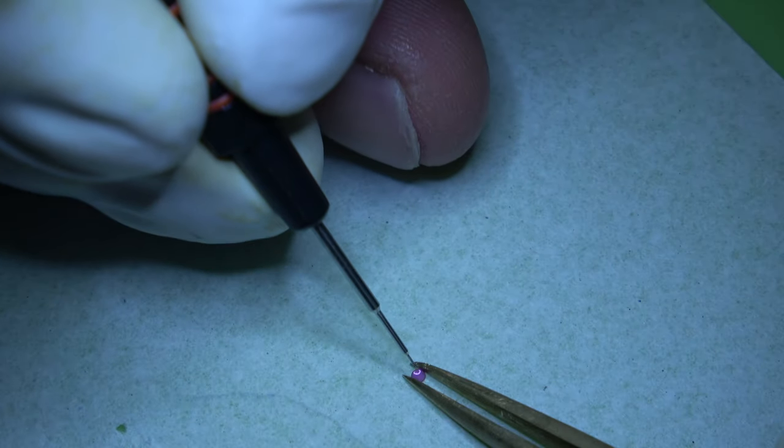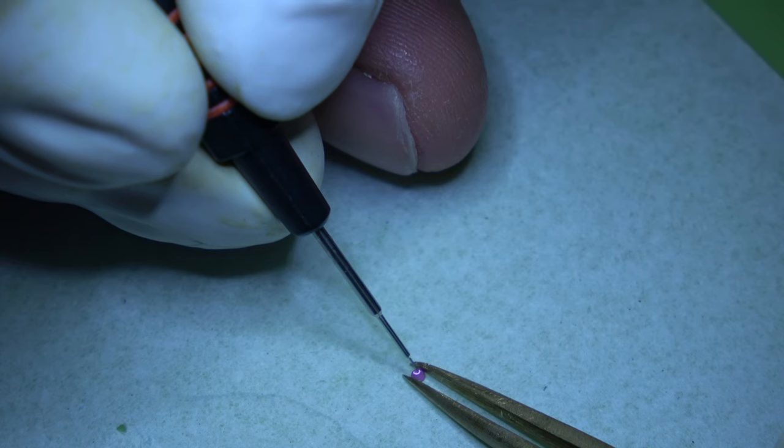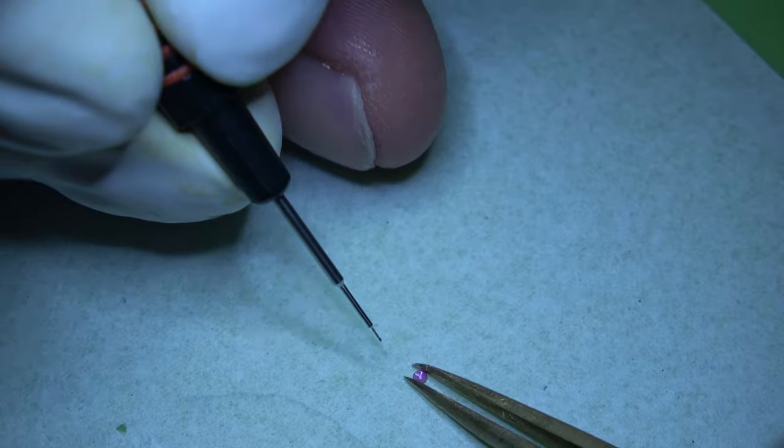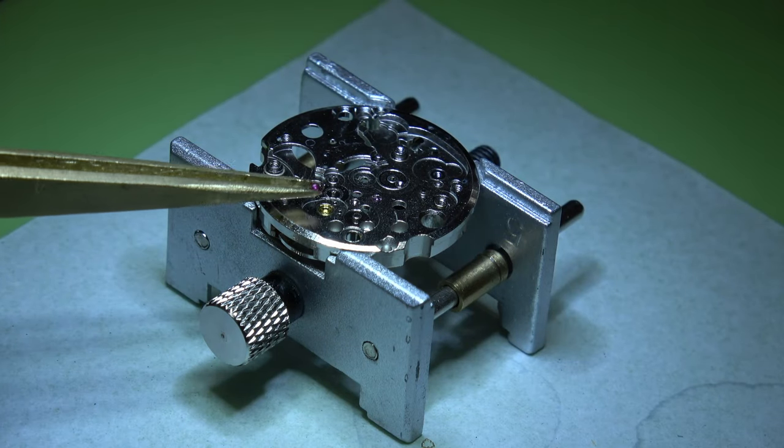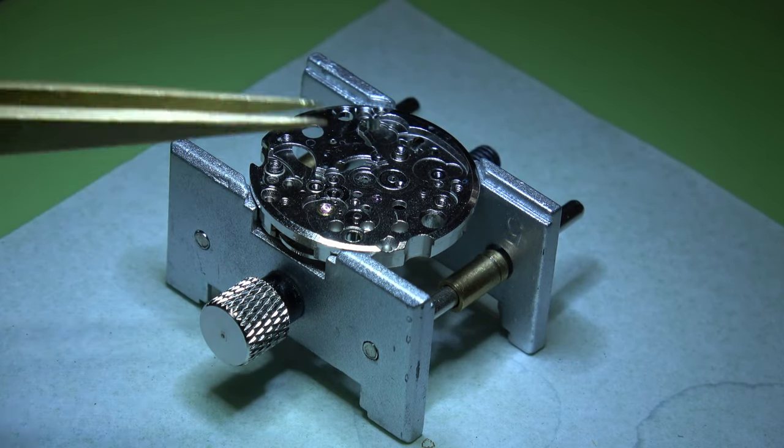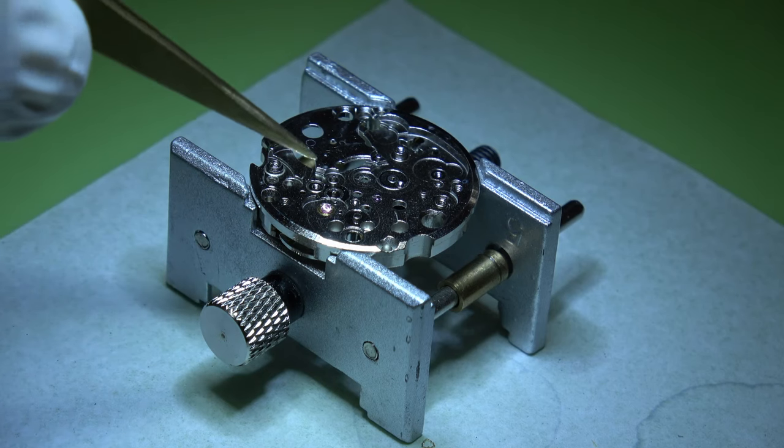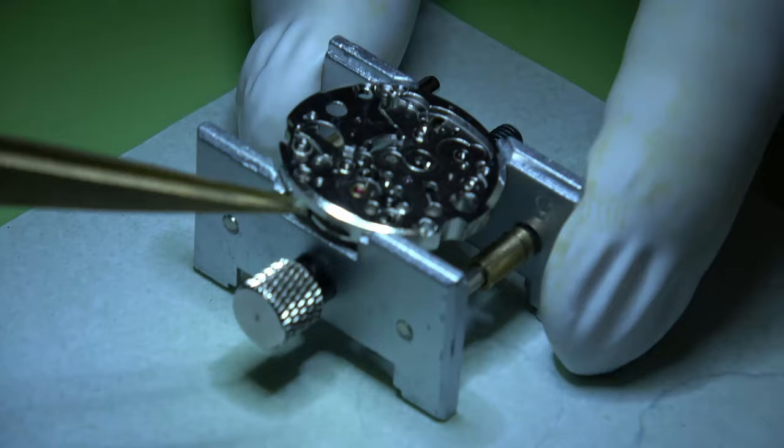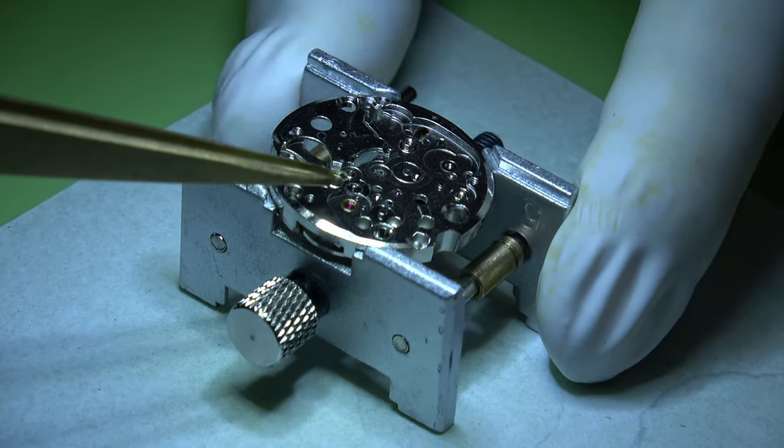Just turning it over like that, we can get it back in. Then try with a steady hand to put this spring back in. Now I'm using my brass tweezers in the hope that they don't start picking up that spring through magnetism.